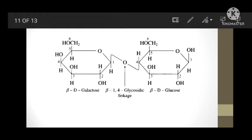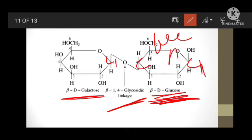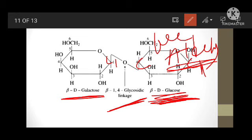Just look at the structure of lactose. This is beta-D galactose and this is beta-D glucose. In beta-D galactose, C1 carbon is involved in the glycosidic linkage. In beta-D glucose, C4 carbon is involved in the beta-1,4 glycosidic linkage. At C1 of beta-D glucose there is a free aldehyde group, which exhibits reducing properties and forms osazones in the shape of a powder puff. Reducing sugars, when boiled with phenylhydrazine in acetic acid, form osazones. So lactose is a reducing disaccharide.